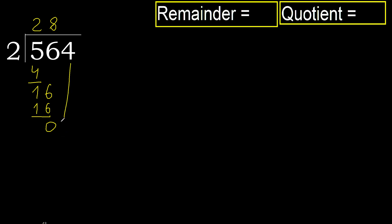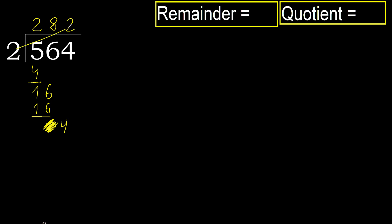Complete. Eliminate zero here. Bring down: 2 multiplied by 2 is 4. 4 is not greater. Subtract.